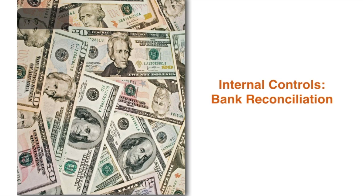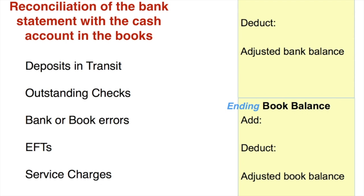In this video we're going to change gears just a little bit. We're going to talk about internal controls and specifically we're going to look at the bank reconciliation, which is one of the most important controls for cash. If you've ever balanced your checkbook, if you have a checking account, then in reality you've really done a bank reconciliation. So let's look at some things that actually affect a bank reconciliation.